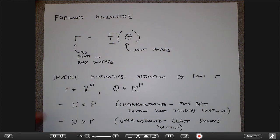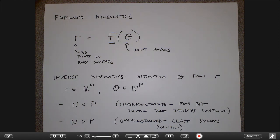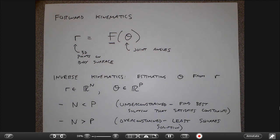The under-constrained situation is more like saying: if I want to get a position on the body to a certain position in the world, what joint angles accomplish that? For example, I have a human kinematic model and I want to reach out and grab a position in space. I'm only pinning a couple of positions in 3D space and asking the rest of the joints to follow along in a realistic way.